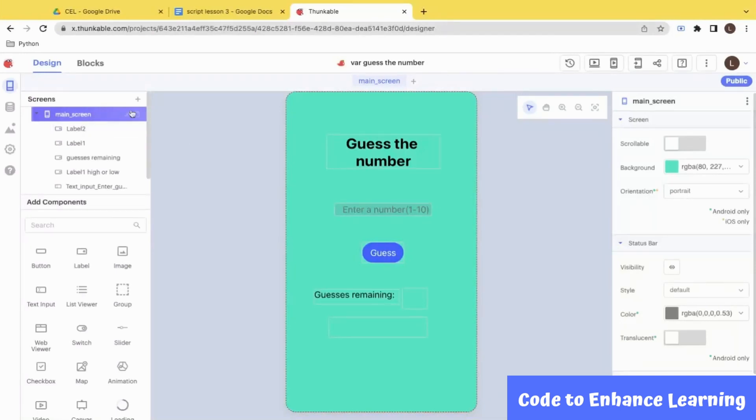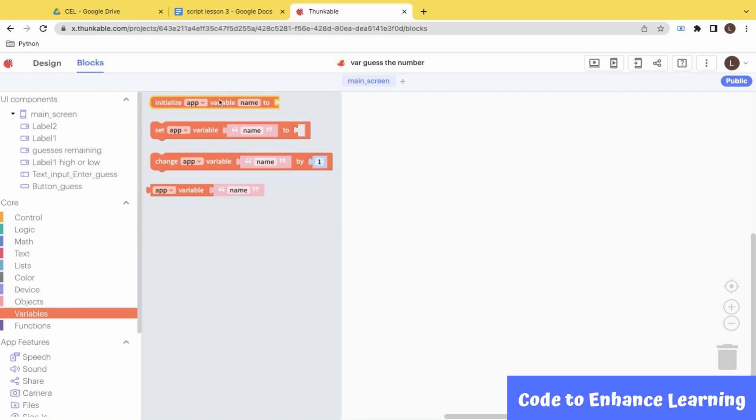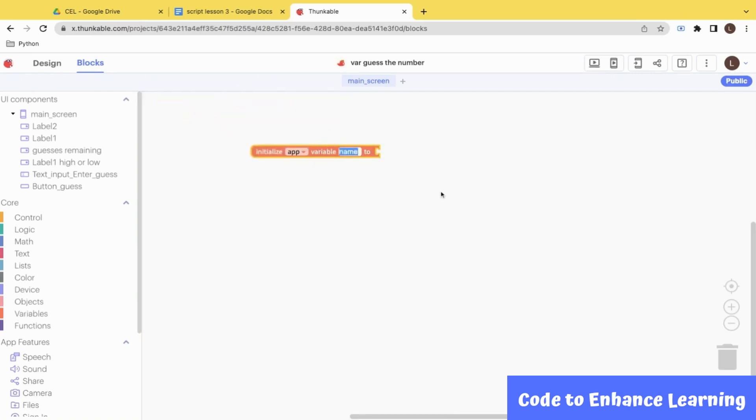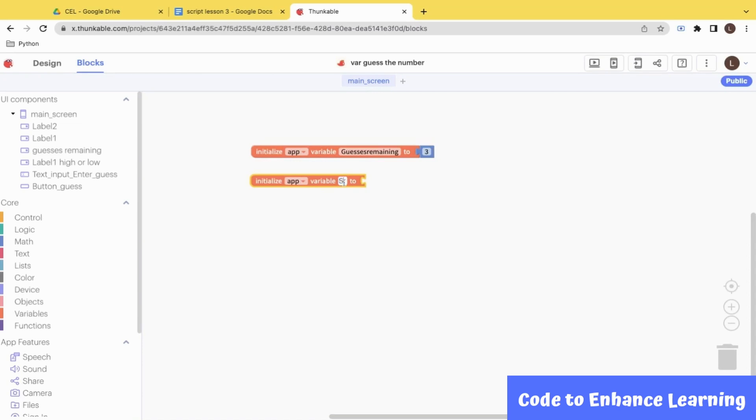Now I will go to the blocks section to write the code. I will initialize the variables for our project. By going to the variables tab, I will pick out this block to initialize the first variable, guesses remaining. I will set the value of this variable to be 3. Now I will initialize a new variable from the variables tab and name it secret number. The original value of this will start to be 0. This value will change over time in our project.